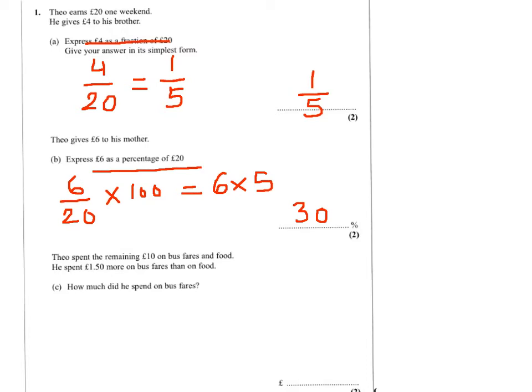Now for part c, Theo spent the remaining £10 on bus fares and food, and he spent £1.50 more on bus fares than on food. If I take away the extra spending on bus fares, this gives me £8.50. If he spent the same amount on food and bus fares, that means £8.50 divided by 2, which will give us £4.25.